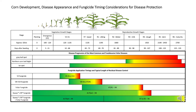And then we have a foliar fungicide at the VT/R1 timing. Generally you're going to be using an airplane or a helicopter, and with some of our premium fungicides we can get 35 to 45 days of residual. With some of the others you can typically get about 28 days, and with that in mind if you make a VT/R1 application you're probably going to have protection out through around R4.